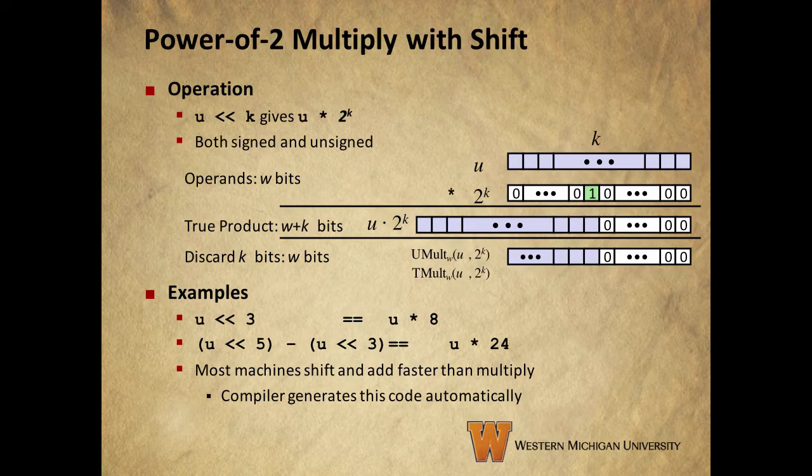Now, let's take a look at using shifts to multiply and divide. We can multiply by a power of 2 using a left shift. This works the same with both signed and unsigned integers. If we shift an integer u by k bits, the result is the same as u times 2 to the k.